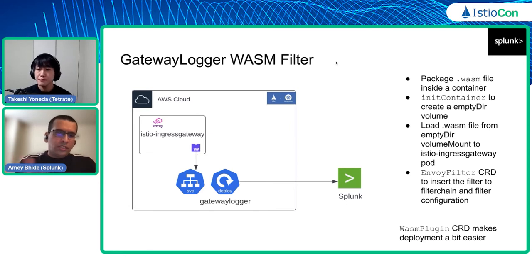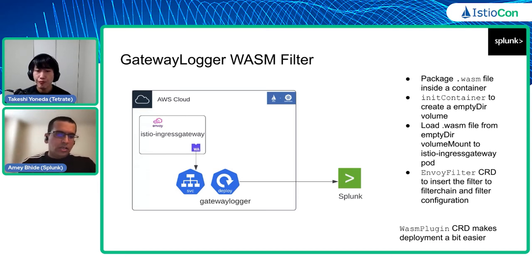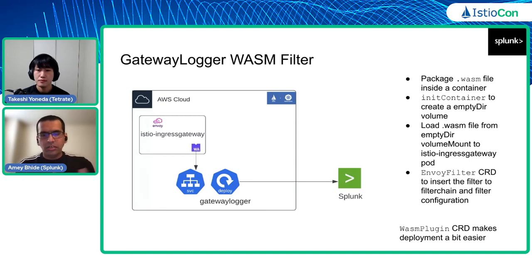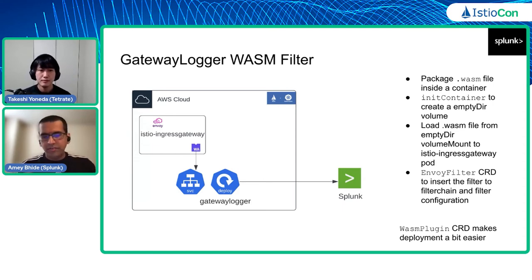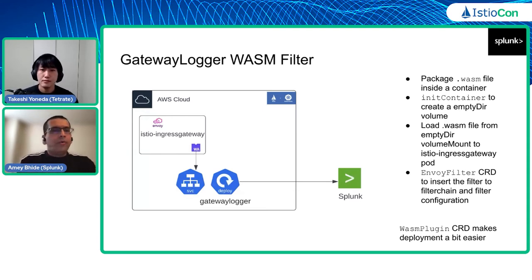We deploy this WASM filter on Istio ingress gateways — not on the sidecars, just the ingress gateways. The filter looks at different parts of the HTTP request, assembles a message in the required format, examining HTTP request headers and response headers, then sends a message to a component called Gateway Logger that we wrote — it runs in the same cluster and eventually forwards that to Splunk.